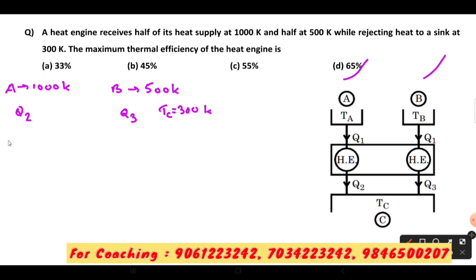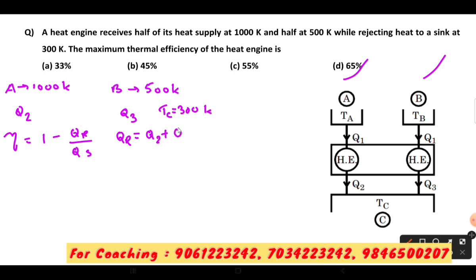In the engine efficiency equation, efficiency of the engine is equal to 1 minus QR by QS. 1 minus QR by QS is equal to TL by TH. Now QR is equal to the heat we reject, which is Q2 plus Q3.